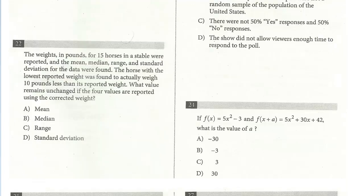Let's take a look at 22. The weights in pounds for 15 horses in a stable were reported, and the mean, median, range, and standard deviation for the data were found. The horse with the lowest reported weight was found to actually weigh 10 pounds less than its reported weight. What value remains unchanged if the four values are reported using the corrected weight? Originally we had a group of horses, and assuming all of the horses' weights were accurate except for the lowest horse, the lowest weighing horse, and that weight is actually 10 pounds less.